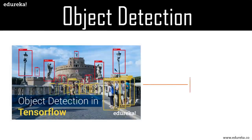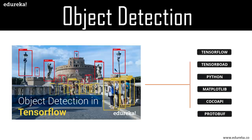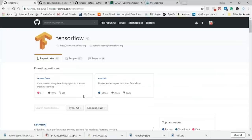Now let's start our demo and see how we can perform object detection using TensorFlow. First, make sure you have TensorFlow installed with all its dependencies — TensorBoard, Python, Matplotlib, the COCO API, and protobuf. For CPU TensorFlow, you can just do pip install tensorflow, but the GPU version is much faster at processing, so it is ideal. Next, clone the GitHub repository of TensorFlow by going to GitHub and searching for the official TensorFlow repository, then go to the models section.